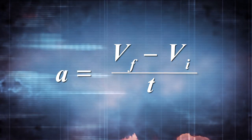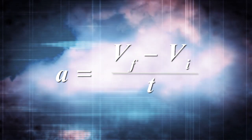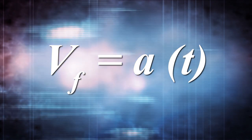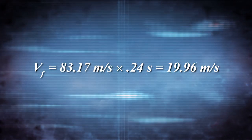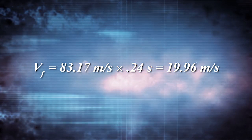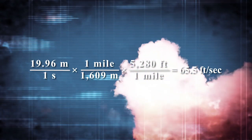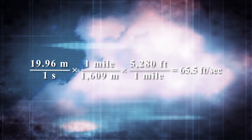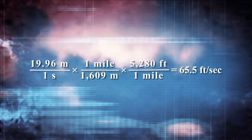We now have all the information needed to calculate the exit rail velocity. Using the equation: acceleration equals final velocity minus initial velocity divided by time, and since initial velocity is zero, final velocity equals acceleration multiplied by time. Final velocity equals 83.17 meters per second squared multiplied by 0.24 seconds, giving 19.96 meters per second. Converting to feet per second using the factor of 1 mile per 1,609 meters times 5,280 feet per mile gives us 65.5 feet per second, which is well above our minimum exit rail velocity of 50 feet per second.